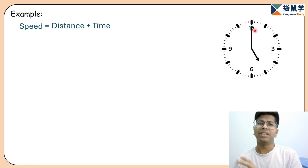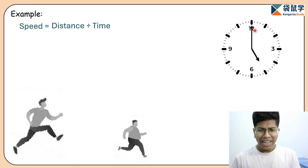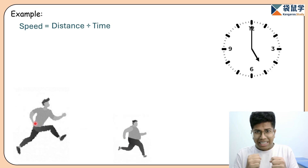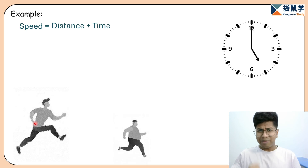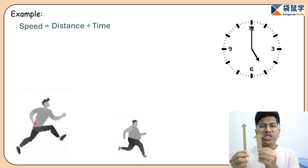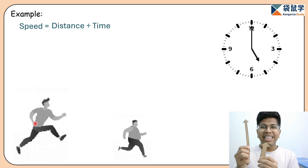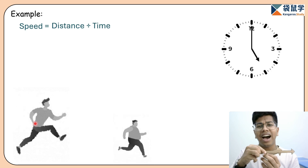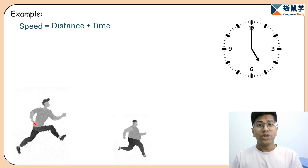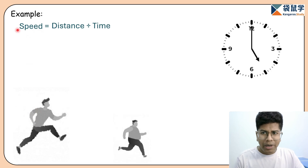We can observe that the minute hand and hour hand are always chasing each other. Think of it as a police and thief scenario — a fat, slow, short thief is running, and a tall, thin, fast policeman is chasing after him. This is similar to the hour hand and the minute hand. The hour hand is fat, slow, and short, and the minute hand is tall, thin, and very fast — always chasing the hour hand, and even after crossing it, it tries to chase again.